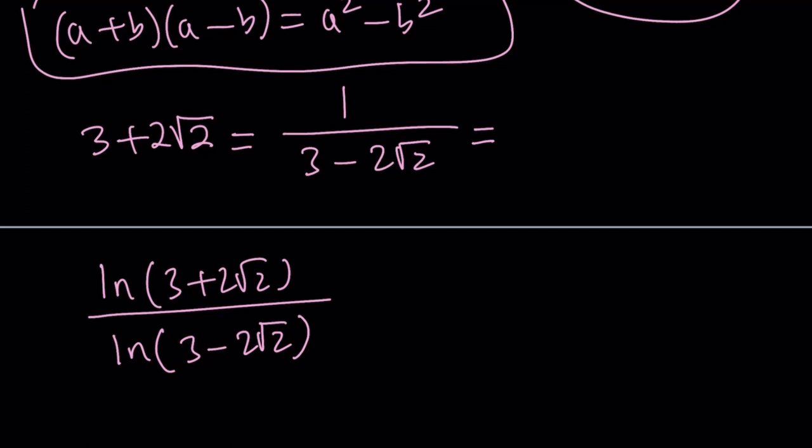So, we can go ahead and write 1 over 3 minus 2 root 2 as 3 minus 2 root 2 to the power negative 1. That makes sense, right? So, whenever you have something like 1 over x, you can write it as x to the power negative 1.